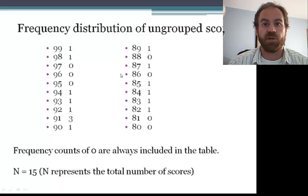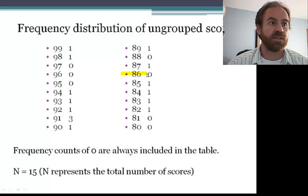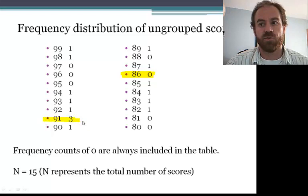So we have to organize it into a frequency distribution. Notice that we note each possible score and the frequency of occurrences of that score. So in this example, even though we didn't get a score of 86, we still have to note that in our distribution. We did get a score of 91. In fact, we got three scores of 91, so we have to note how many of those scores we received.